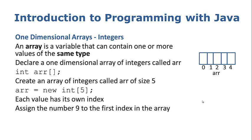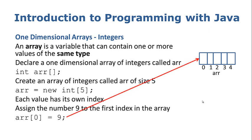Suppose we wanted to assign the number 9 to the first index of that array — to put the number 9 where index 0 is. The code for that is R[0] equals 9. If it were just a regular variable we would just say R equals 9, but because it is an array we put the index in the square brackets and then assign the value 9, which places 9 into index 0 of the array named R.